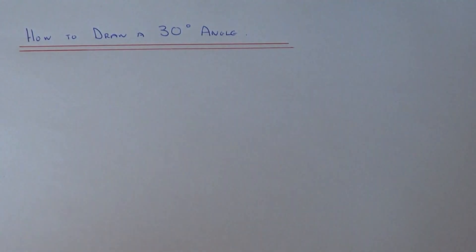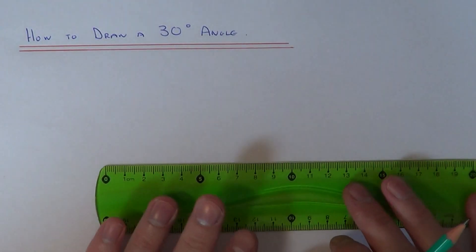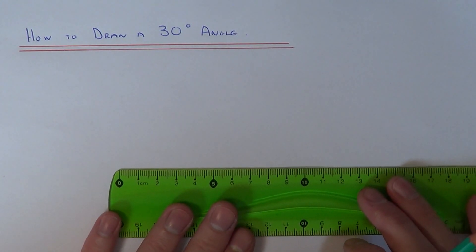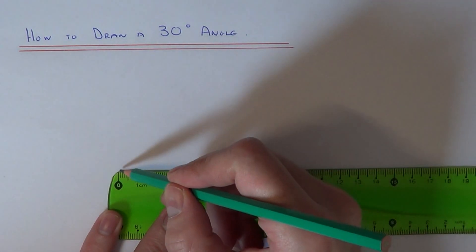Hi, today I'm going to show you how to draw a 30 degree angle using a compass and a ruler. The first thing you need to do is draw a line 6cm long on your page.